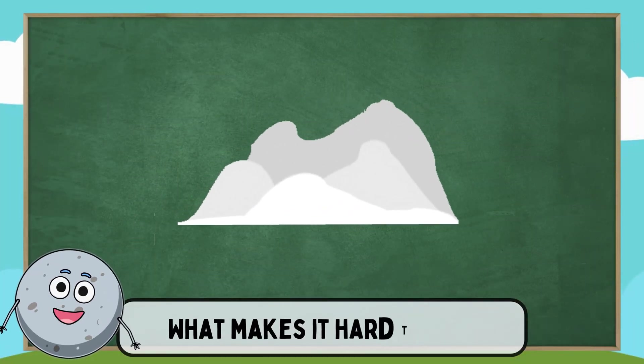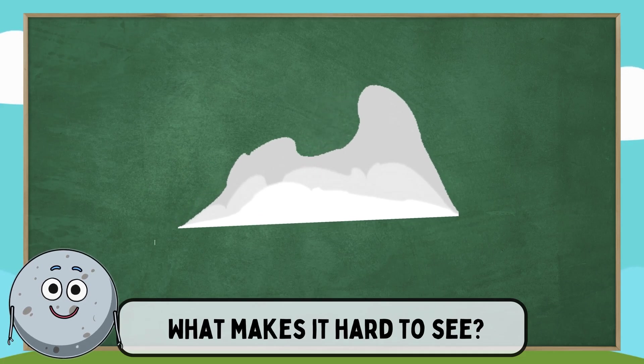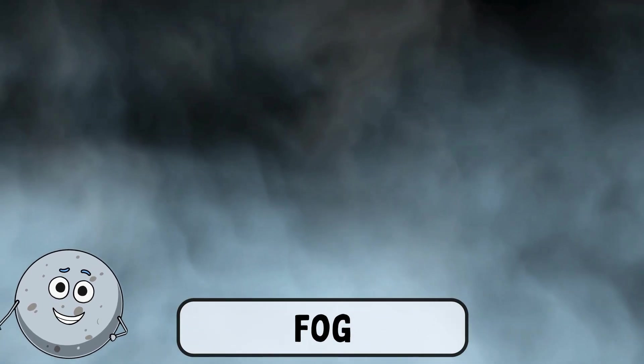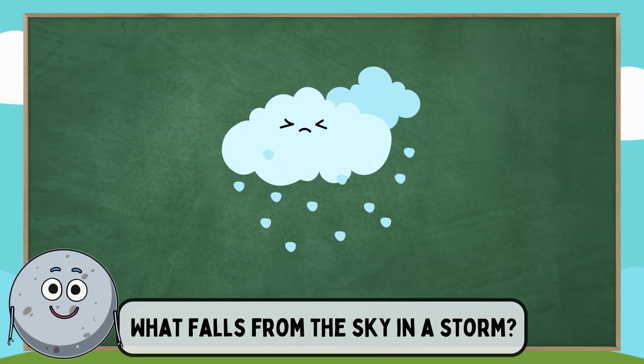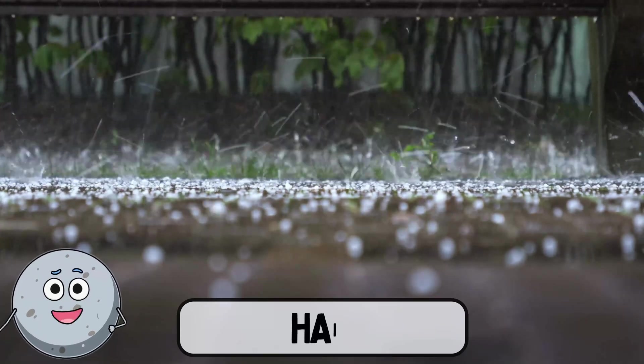What makes it hard to see? Fog makes it hard to see. What falls from the sky in a storm? Hail falls from the sky.